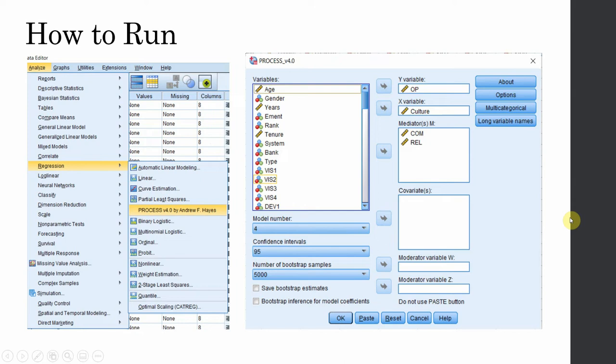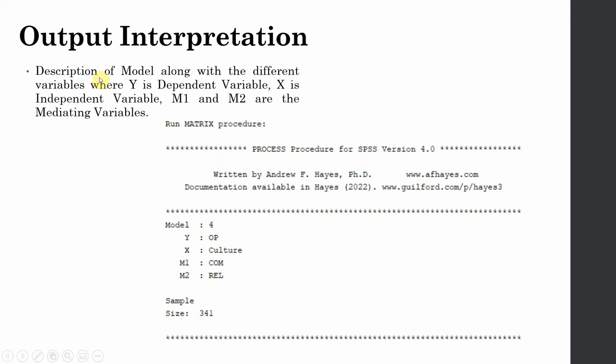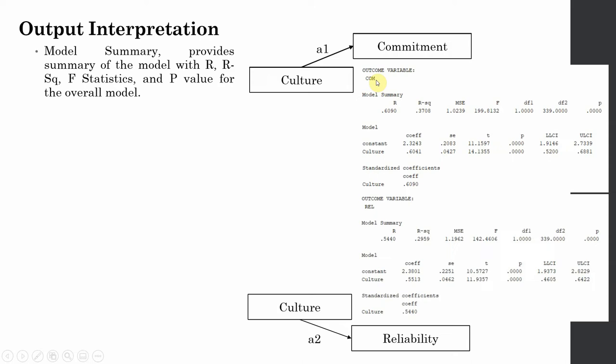Now let's interpret the output. The model description shows Y as the dependent variable, X as the independent variable, M1 as mediating variable one, M2 as mediating variable two, and the total sample size. Each endogenous variable — anything affected by another variable — is assessed separately as an outcome variable. Commitment is only affected by culture, and reliability is only affected by culture, so there are two separate tables.